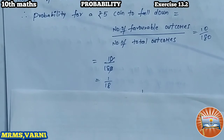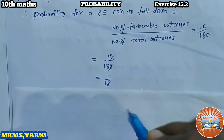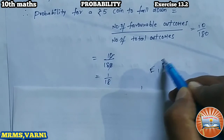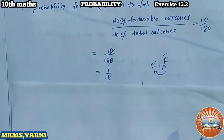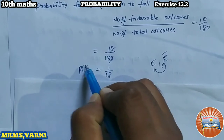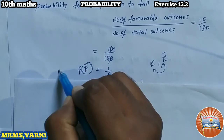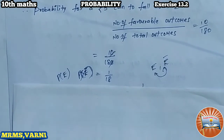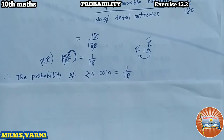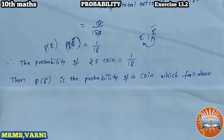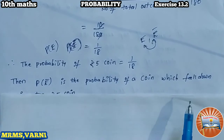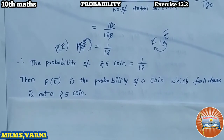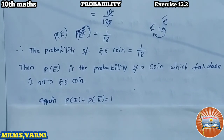Now we have to find the probability of not getting a five-rupee coin. Consider getting a five-rupee coin as event E, so not getting a five-rupee coin is E complement, or E bar. These are complementary to each other. The probability of a five-rupee coin is 1 by 18, and we need to find P(E bar). We use the formula: P(E) plus P(E bar) equals 1.